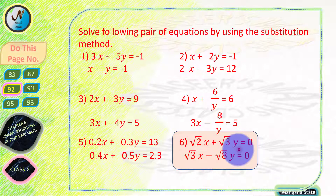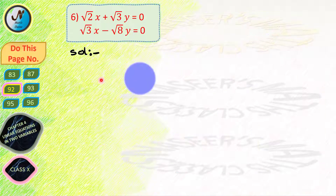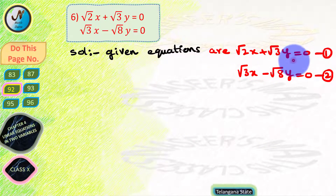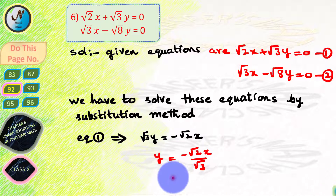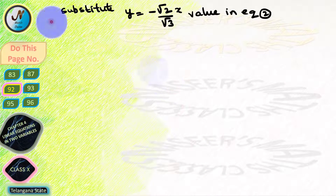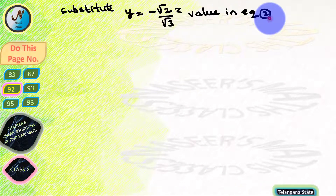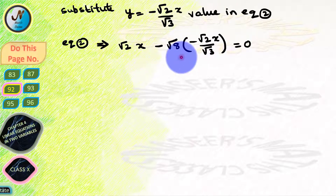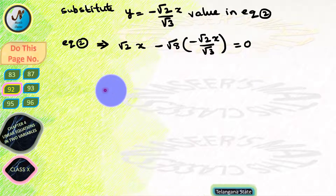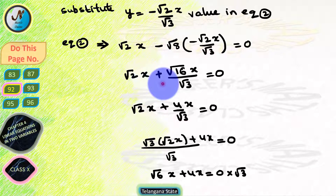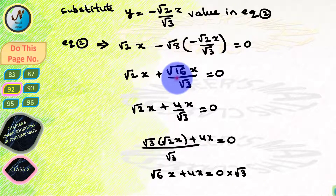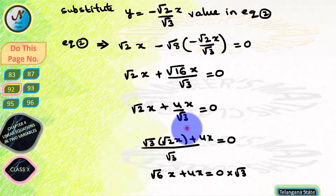Now we solve page number 92, problem 6. Two linear equations are given: root 2 x plus root 3 y equals 0 — let this be equation 1 — and root 3 x minus root 8 y equals 0 — let this be equation 2. To solve by substitution method, we write equation 1 as y equals minus (root 2 by root 3) x. Substituting in equation 2: root 3 x minus root 8 into (minus root 2 by root 3) x equals 0. After multiplying root 8 by root 2, we get root 16, giving root 3 x plus (root 16 x) by root 3 equals 0.